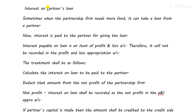Sometimes the partnership firm needs more funds than it already has. Although the partners have contributed capital, the partnership firm requires more funds. So the partnership firm asks a partner if they can contribute some more money. The partner says yes, but with a condition: they will not contribute it as capital, since they have already contributed enough capital. They will contribute it in the form of a loan.